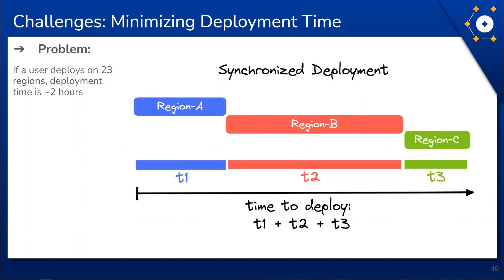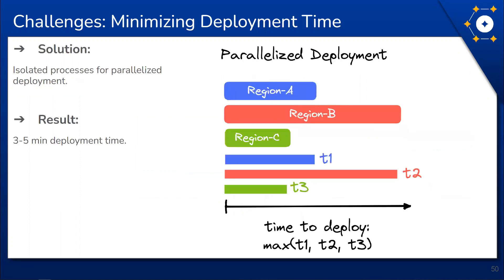The first challenge is minimizing deployment time. The framework allows testing from as many regions as AWS provides — up to 23 regions can be involved for a single test. Our initial approach was synchronized deployment: waiting for one region to finish deployment before starting another. During development we found that each region takes around five minutes to deploy, so if 23 regions are used a user would have to wait up to two hours before their test even executes — clearly far too long.